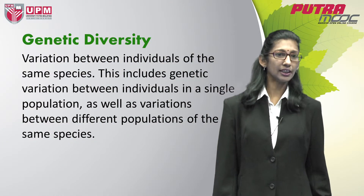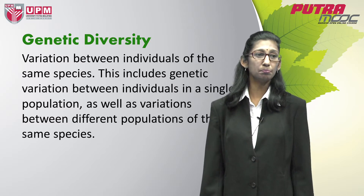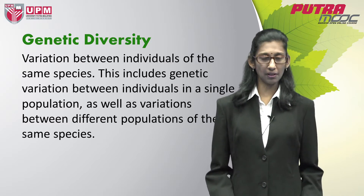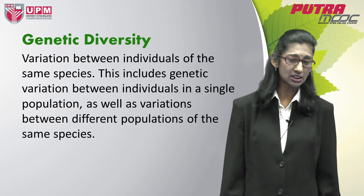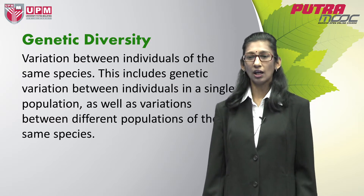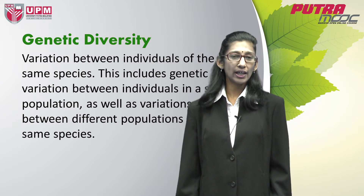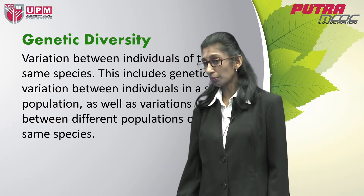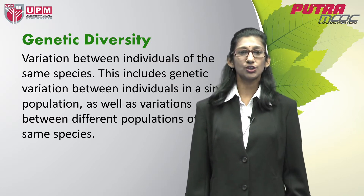The third level is genetic diversity. Genetic diversity refers to variation between individuals of the same species. A simple example that makes sense to all of us is looking at the species Homo sapiens, or human beings. Just look around you — among the people you see, which we call a population, there are variations. And when compared between populations, for example among Indians, Europeans, and Asians, you can see distinct variation. This is what we call genetic diversity.